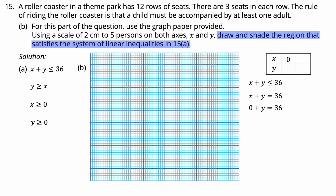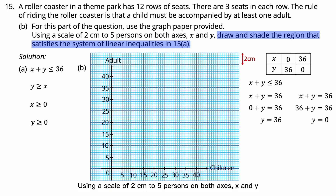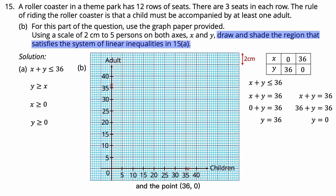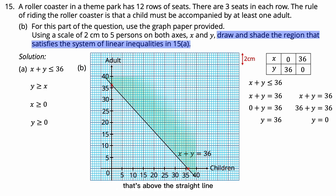To graph X + Y ≤ 36, convert to the equation X + Y = 36. When X = 0, Y = 36; when X = 36, Y = 0. Plot the points (0, 36) and (36, 0) and join them with a solid line — solid because the inequality uses less than or equal to, meaning the line is included in the solution. Shade the unsatisfied region above the line.